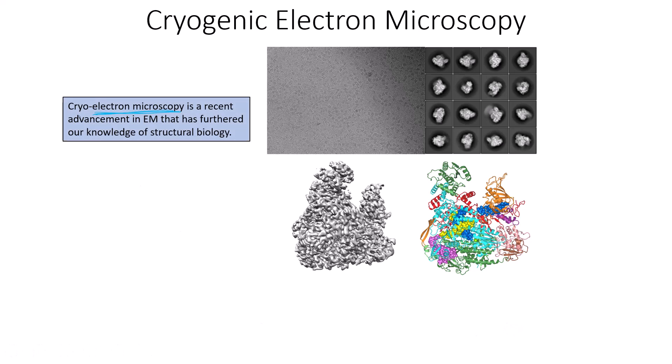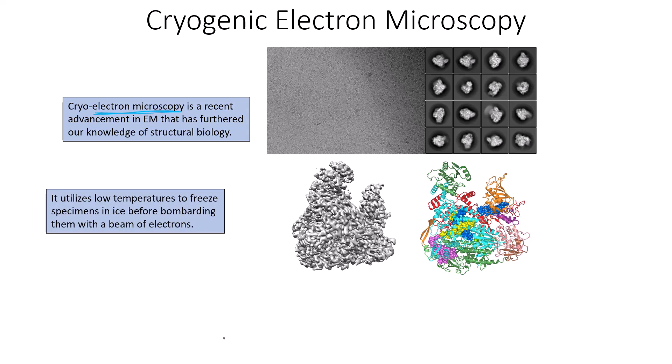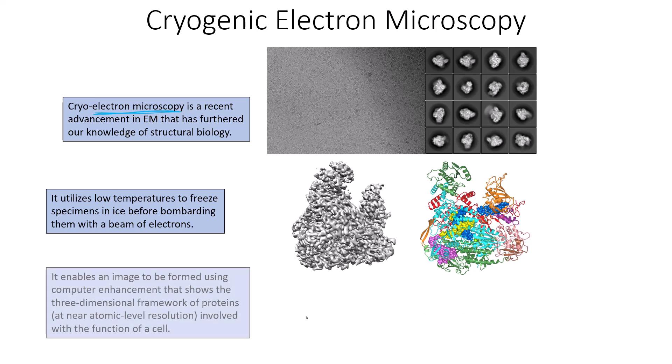Cryogenic electron microscopy utilizes low temperatures to freeze specimens in ice before bombarding them with a beam of electrons. Unlike normal electron microscopy where you coat samples in a heavy metal or slice them very thin, this technique freezes the samples and then shoots them with electrons. Because we are not coating them in a heavy metal, we don't actually increase their size by coating them in metal.